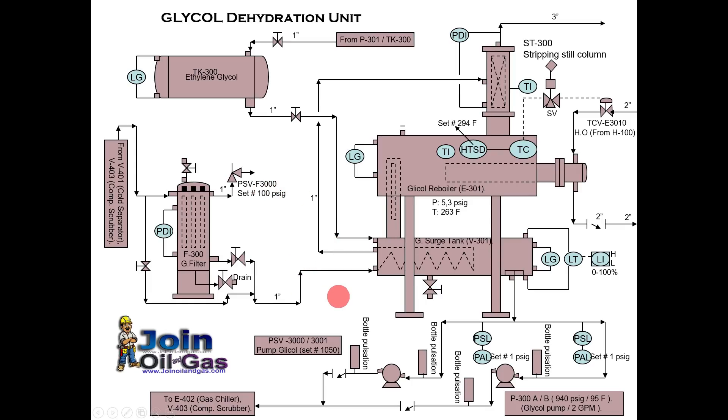Other than this you can see here is makeup glycol storage tank. In case we lost some volume of the glycol we can refill this loop by opening this valve. And that's all about the glycol dehydration unit.